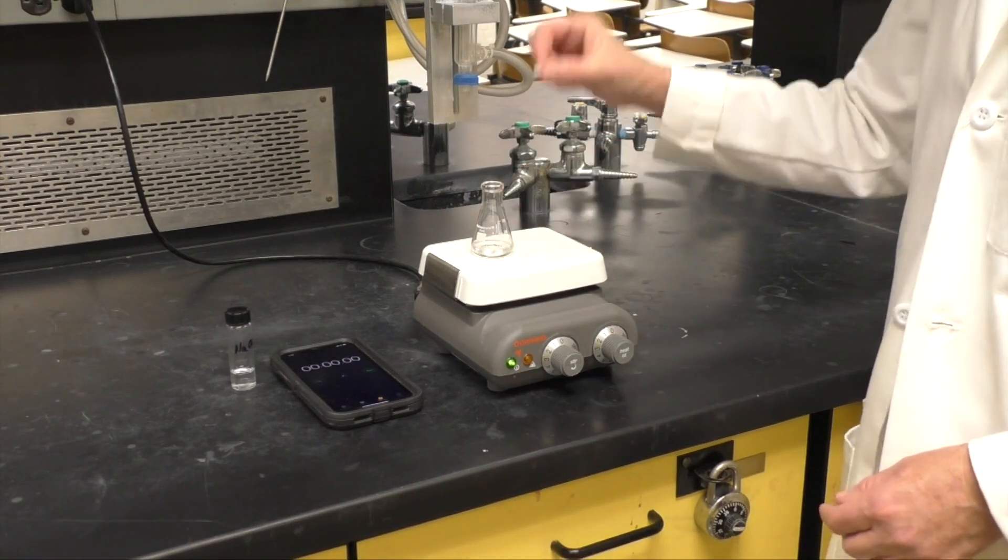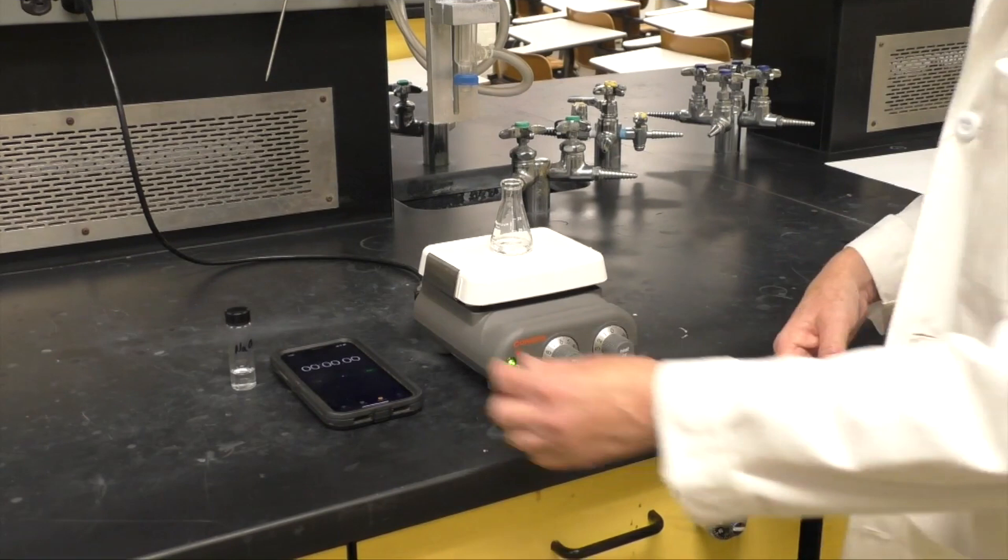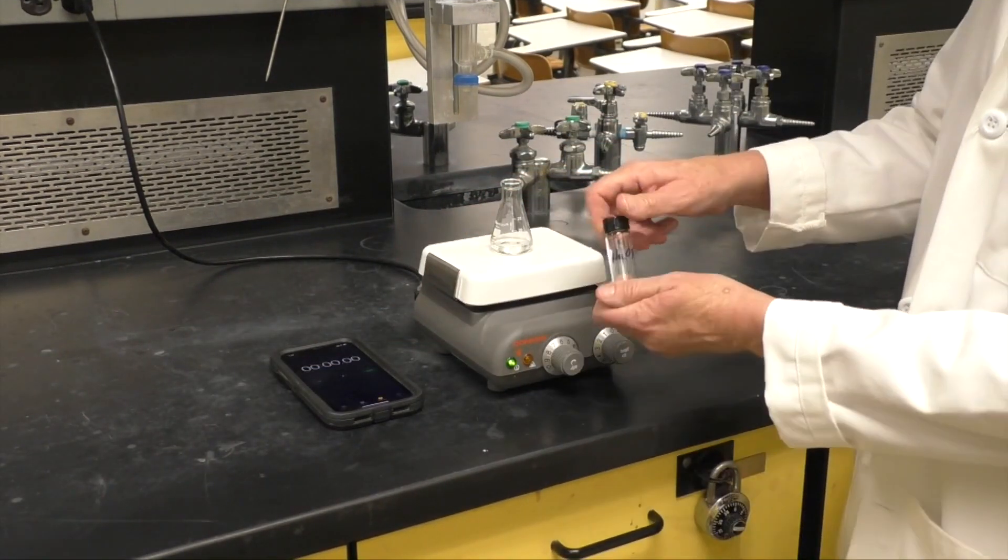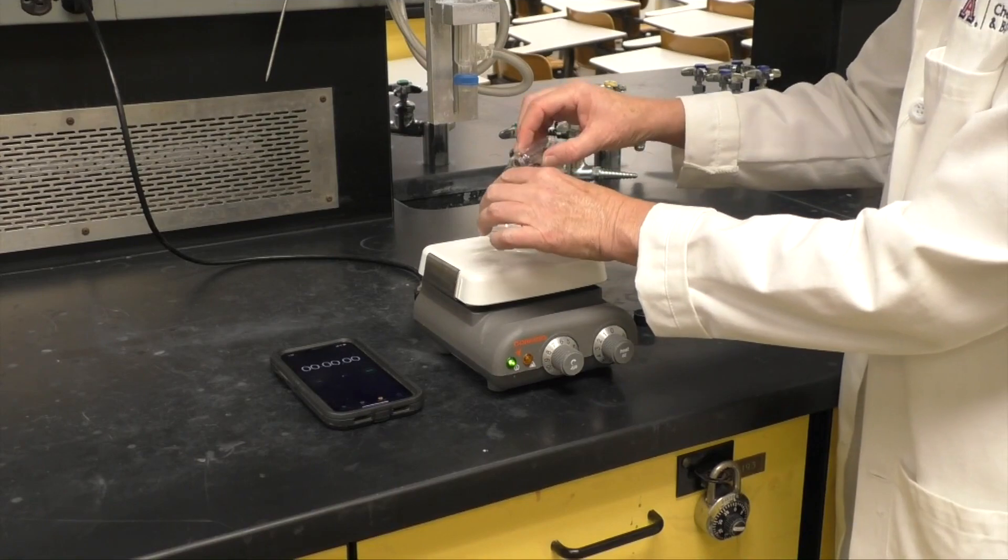Add a stir bar and begin stirring. Have your timing device and observations page ready. Pour the sodium hydroxide into the flask and start your timer.